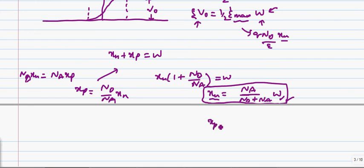So, this equation tells us that particular part. Now, we can write this in terms of x_p also, which will be equal to n_d over n_d plus n_a times w. Now, these are important equations.